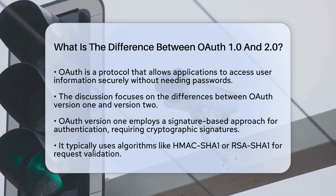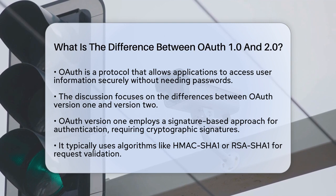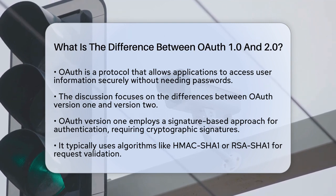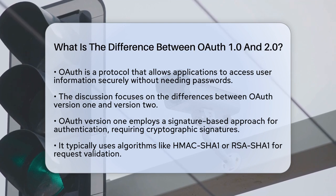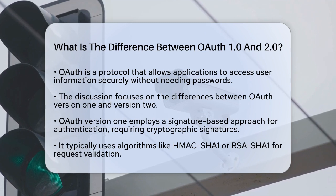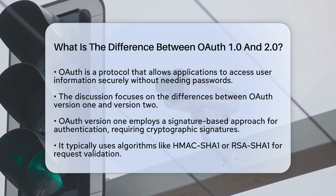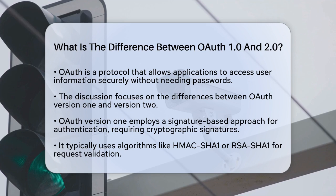OAuth Version 1 uses a signature-based approach for authentication. This means it requires cryptographic signatures to validate requests, typically using HMAC-SHA1 or RSA-SHA1 algorithms. Each request must be manually signed, which adds an extra layer of security but also makes it more complex to implement. This version operates over HTTP and is less common in modern applications due to its complexity.